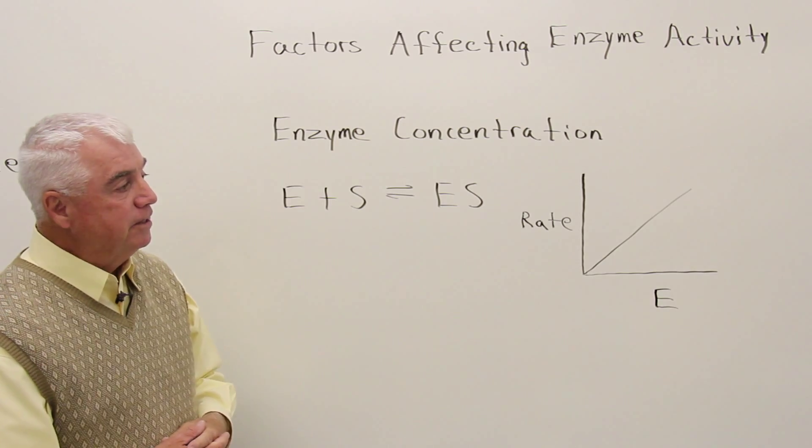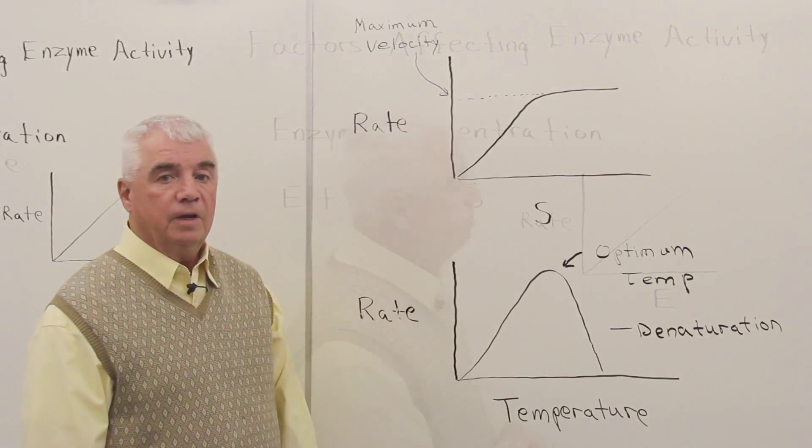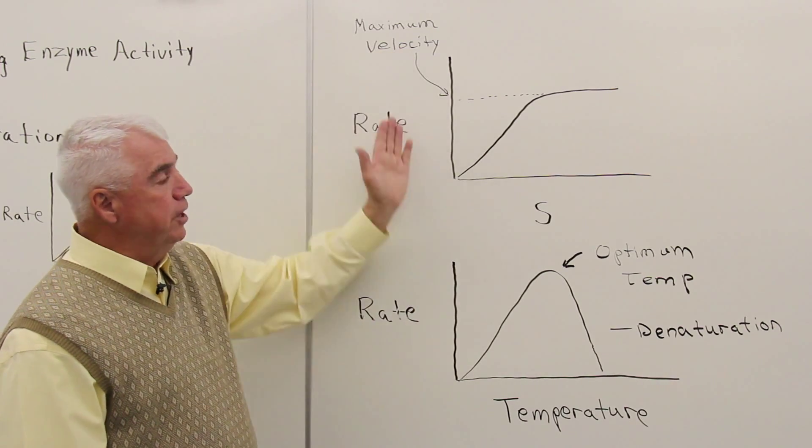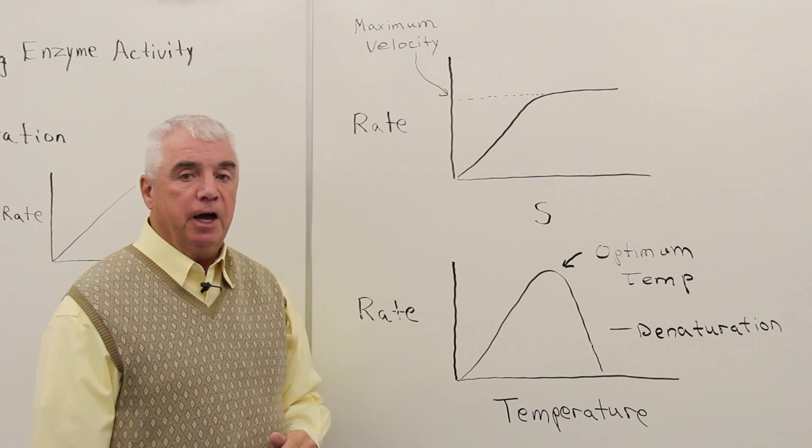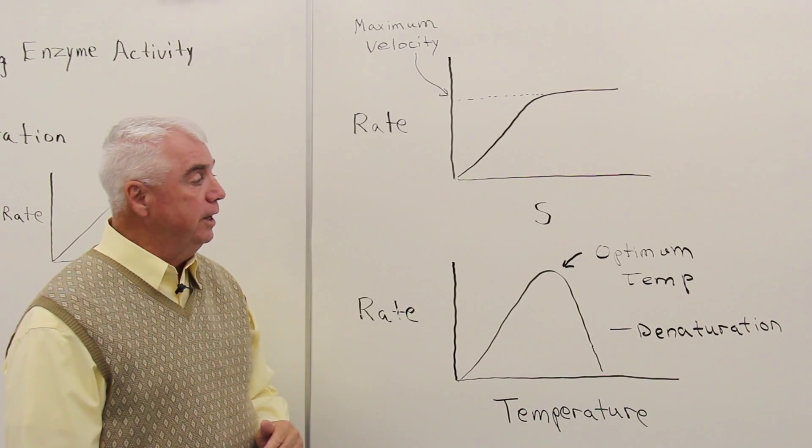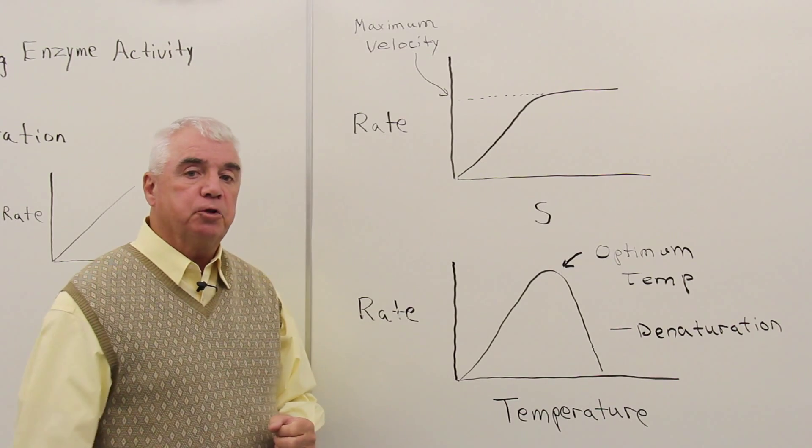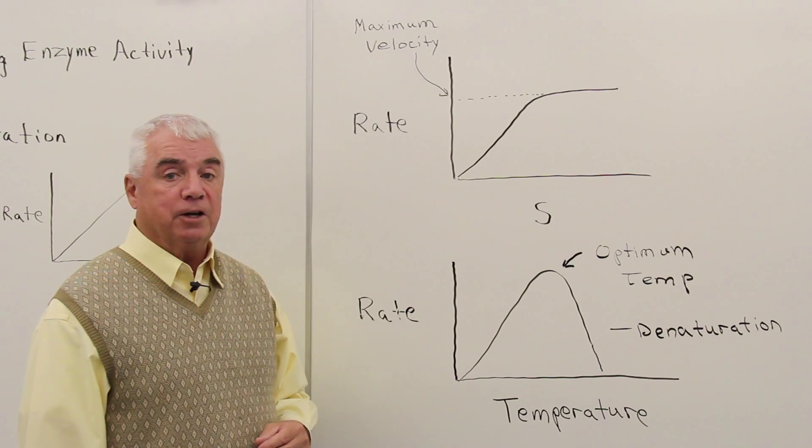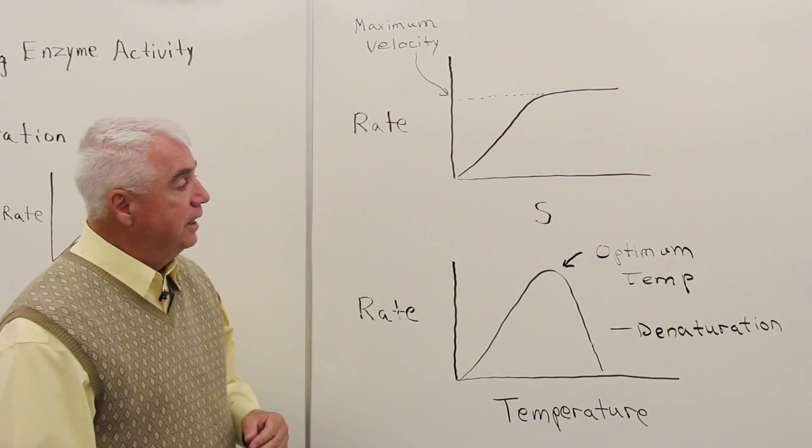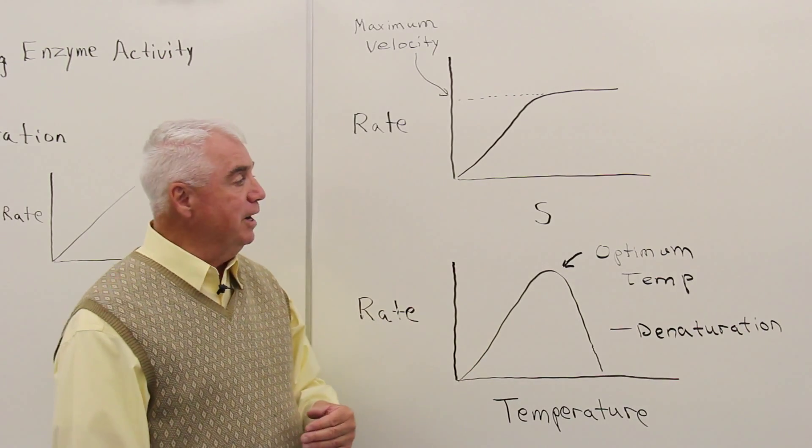Let's look at the effect of substrate concentration on rate. Here again, we have rate on the vertical axis, on the horizontal axis this time, substrate concentration. And we're looking at the initial rate. We just add the substrate in and measure that burst of speed, how fast does the reaction progress. And we're not looking at its rate 10 minutes later or 20 minutes later.